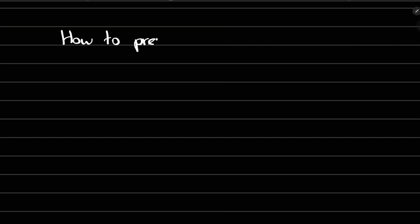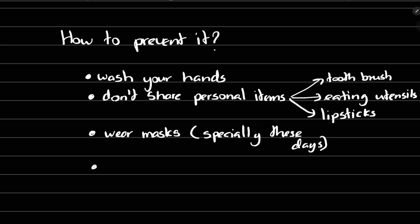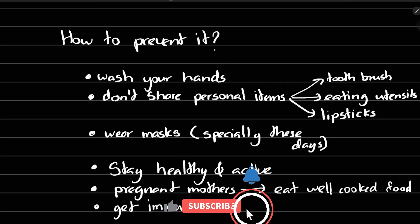Let's look at how you can prevent meningitis. Wash hands more often. Don't share items like toothbrushes, eating utensils, or lipsticks. Cover your mouth and nose. Stay healthy and active. If you are pregnant, eat food that's well cooked. Get immunized.